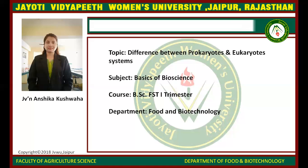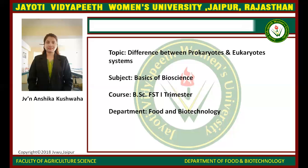What are the similarities between prokaryotes and eukaryotes? Both types of cells have a cell membrane. Both types of cells have ribosomes. And both types of cells have DNA. So this is the difference between prokaryotes and eukaryotes. Thank you, students.